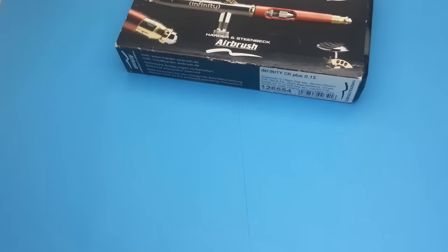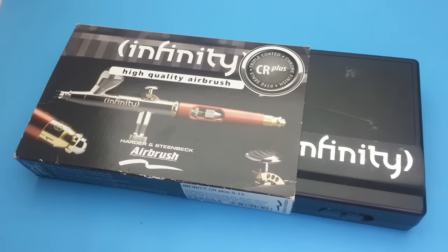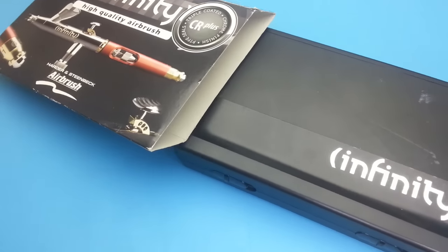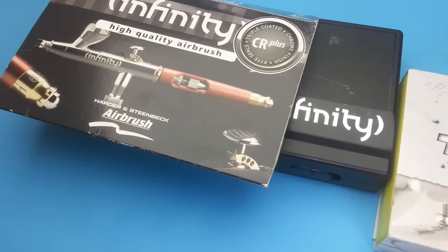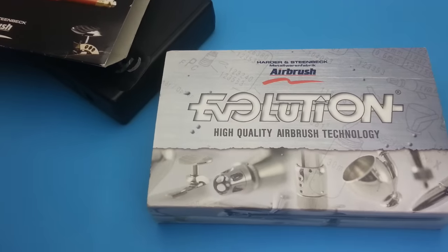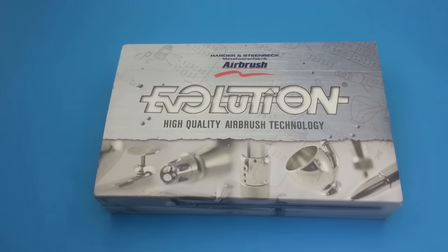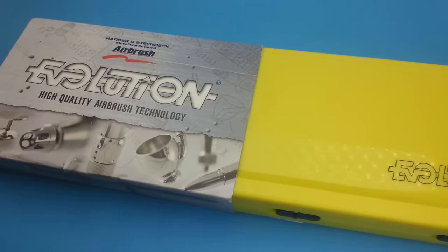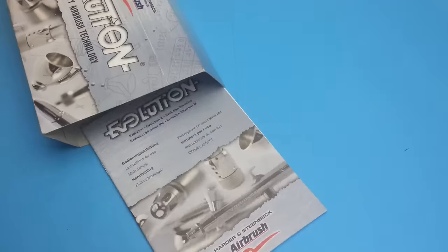Let's see them side by side. This is the Infinity in its box. And this is the Evolution in its box. They both come with a small typical manual.